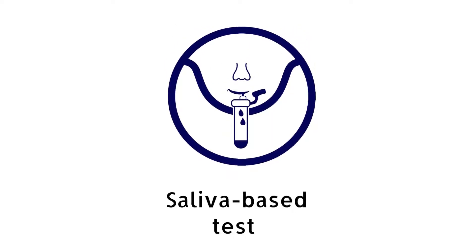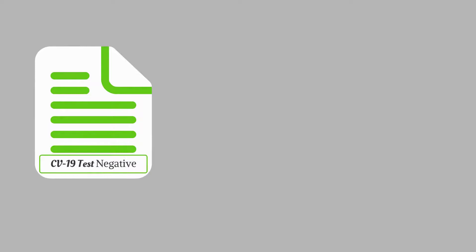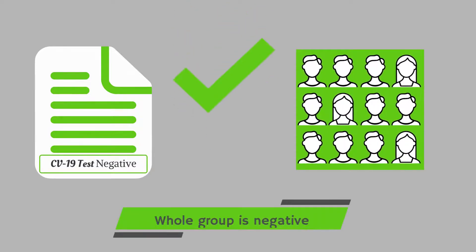In this example, we are using a saliva-based test to perform pooled testing. If the test comes back negative, the organization will know the whole group is negative.